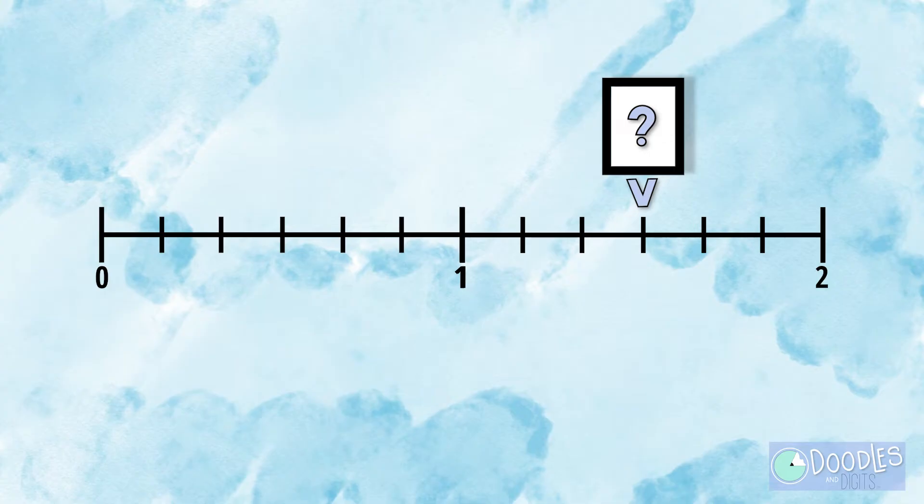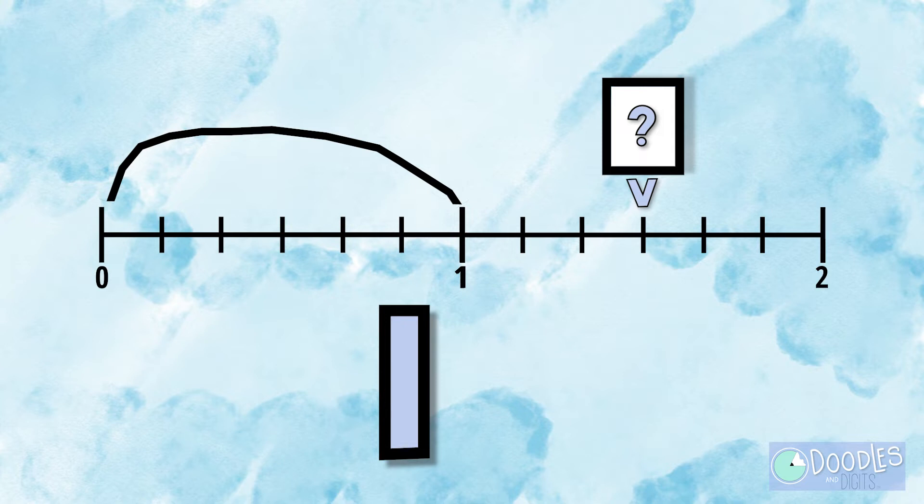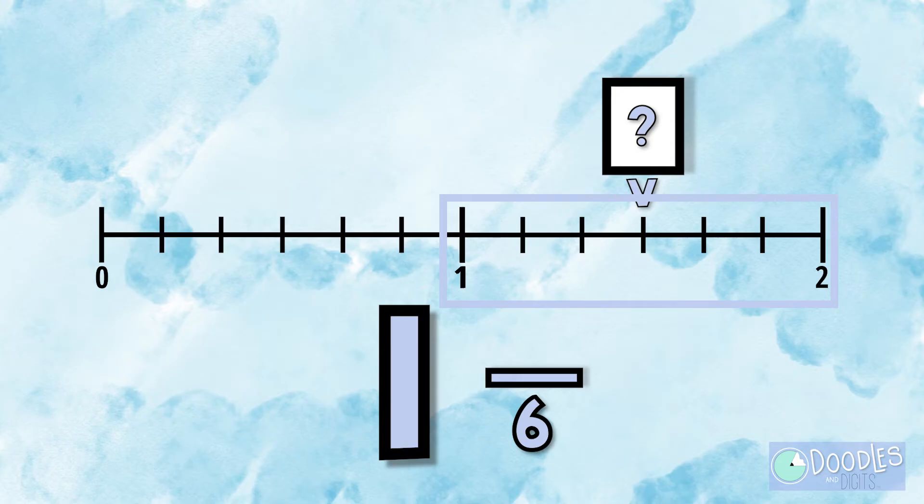What mixed number is this number line showing? Let's first do our hole number jump. So we have jumped one hole number. Now let's try to figure out what fraction this number line is showing. It's broken down into sixths, so we're going to put six on the denominator. How many sixths do we jump? We jump three sixths, so our mixed number is one and three sixths.